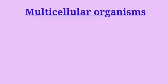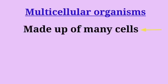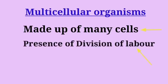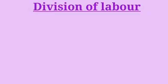Multicellular organisms are made up of many cells. Division of labor is present and every living cell performs certain basic functions. Example of multicellular organism is human, plants, animals, etc.